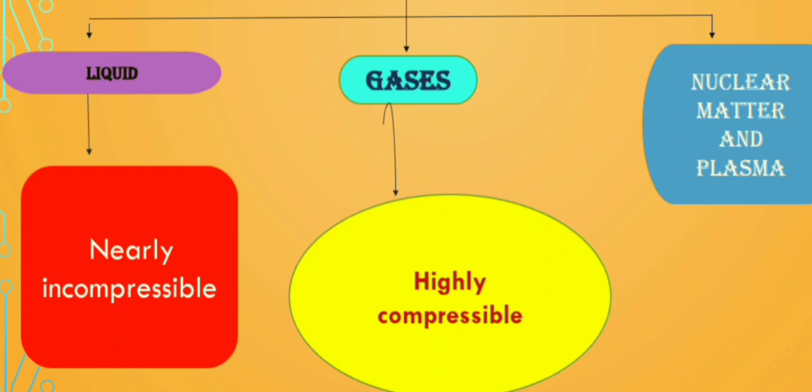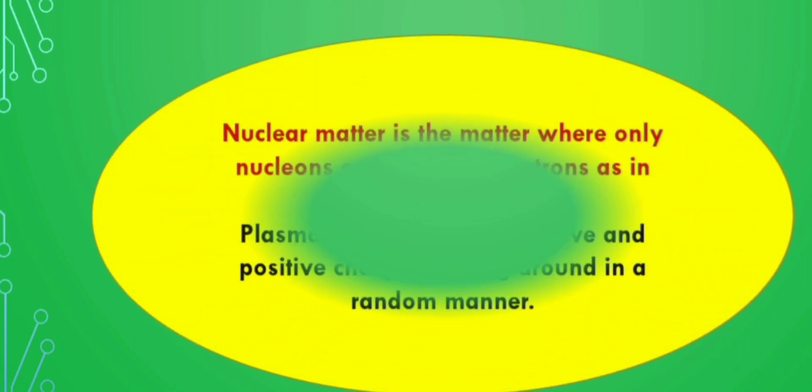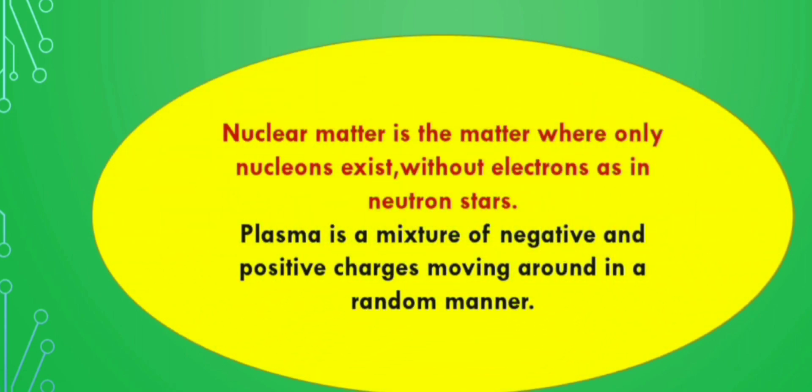Now let's look at what are nuclear matter and plasma. Nuclear matter is matter where only nucleons exist. Protons and neutrons are collectively called nucleons, so only nucleons exist without electrons as in neutron stars. Plasma is a mixture of negative and positive charges moving around in a random manner.